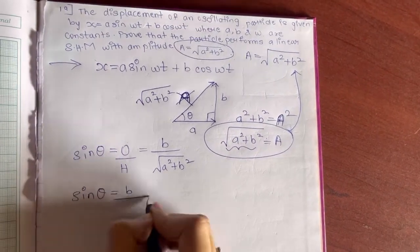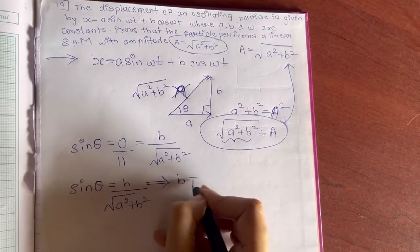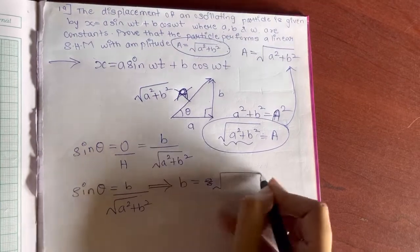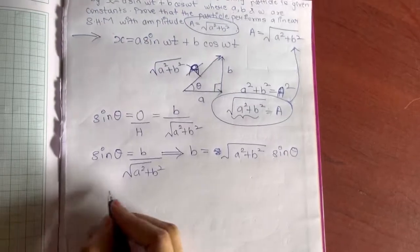From here you get the value of small b, that is √(a² + b²) × sin θ.